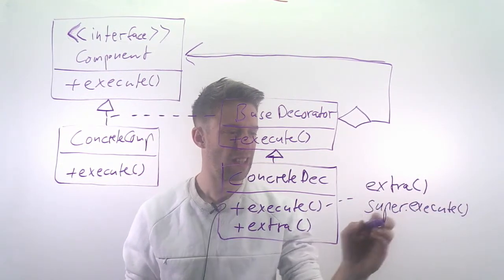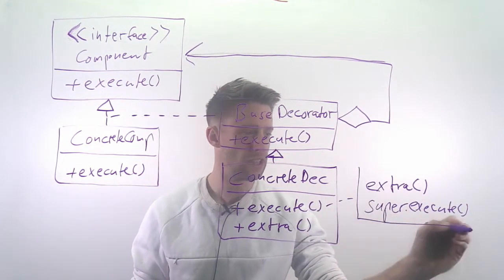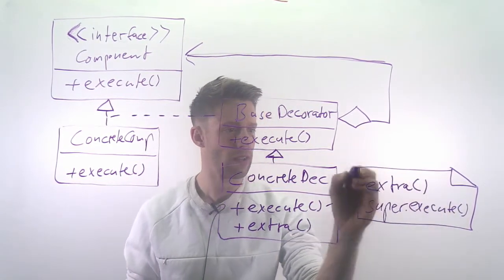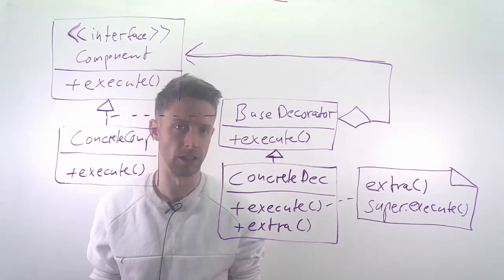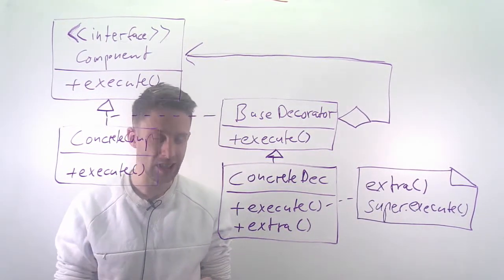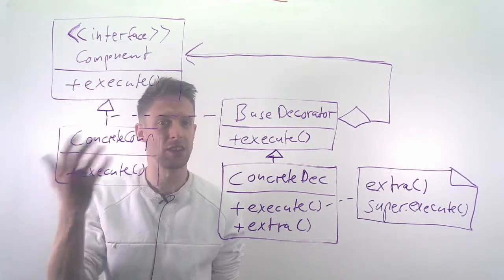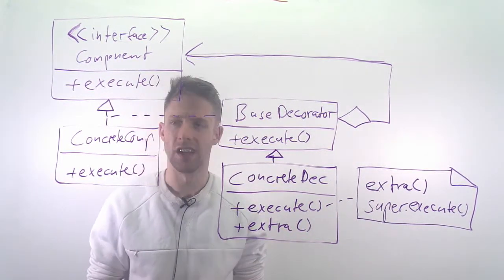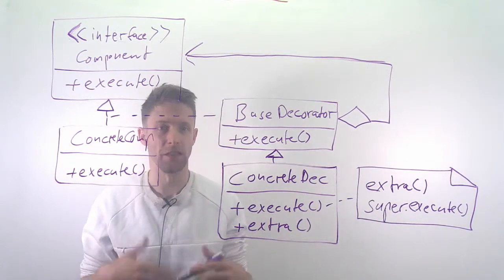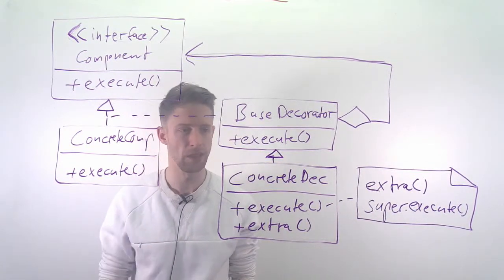So basically, you still keep the original functionality, you still call it, but you additionally call something else—you add something on top. You can build these stacks, you can decorate existing things. This algorithm example is a typical case. You might want to add things on top of file system operations or database operations.